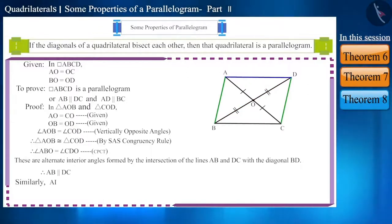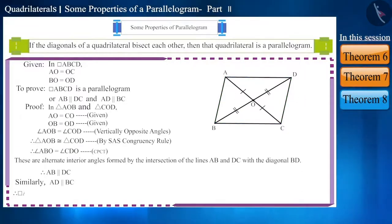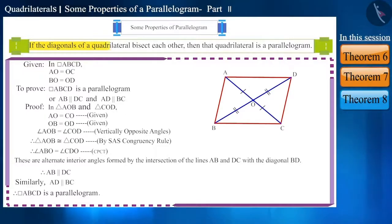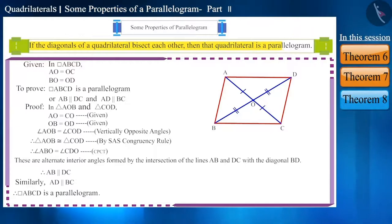Similarly, we can prove AD and BC to be parallel to each other. And now we can say that quadrilateral ABCD is a parallelogram — that is, if the diagonals of a quadrilateral bisect each other, then that quadrilateral is a parallelogram.